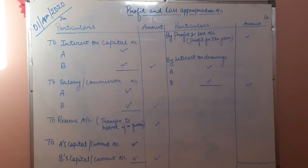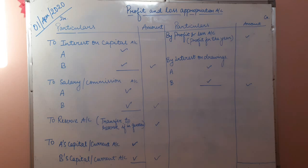Then 'To A's Capital or Current Account' and 'B's Capital or Current Account' — this entry is for profit distribution. If the credit side exceeds the debit side, the right-hand side total minus the left-hand side total gives the profit, which is distributed in the profit sharing ratio mentioned in the question. Many teachers write 'To Profit transferred to A's Capital/Current and B's Capital/Current' so it can easily be used while passing journal entries. I will also teach you a simple trick for journal entries at that time.